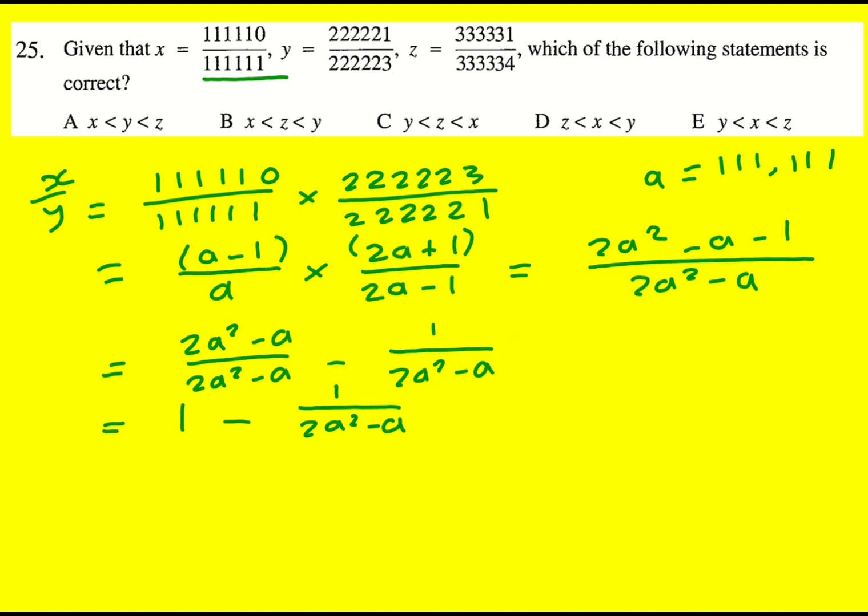And the reason I've done that is that now I've got one minus one over 2a squared minus a. a is positive. Remember, I'm not interested in what it is. And that's exactly why I've called it a, because I don't want to be squaring this or anything. But here I don't need to because I can use algebra. But this is necessarily going to be less than one, which means if I times back by y, x is less than y.